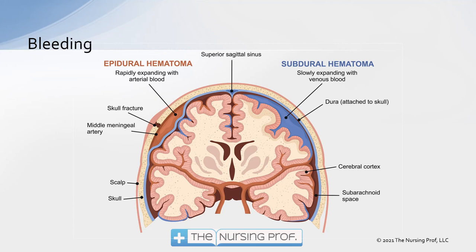A subdural bleed is occurring below the dura. This is typically venous, forming slower and over a longer period of time. There are three types of subdurals: an acute subdural that happens within minutes, a subacute that happens within the first 24 hours of injury, and a chronic subdural that happens over days or weeks — for example, someone who tripped and fell and then over the next week developed more and more severe symptoms. With either an epidural or a subdural, evacuation may be necessary depending on how fast it's forming and how large and localized the bleed is.